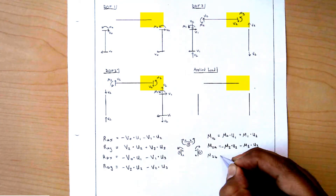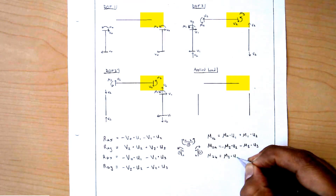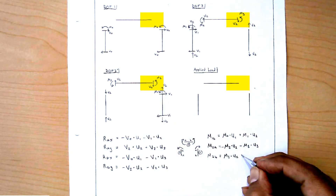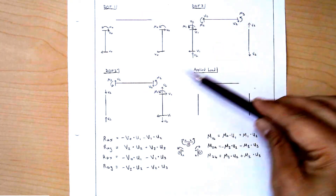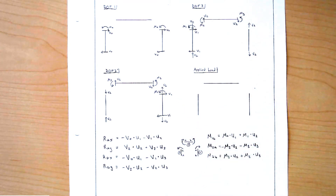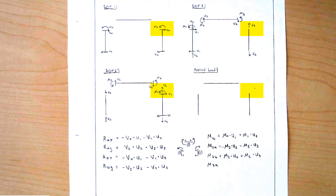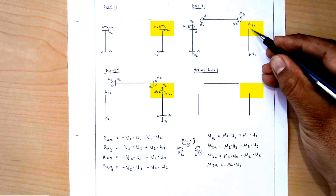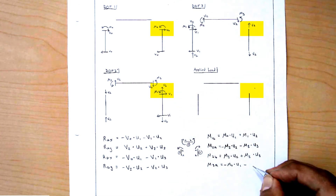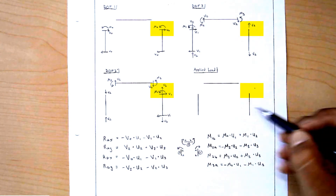Now for M2B: from DOF1 there's nothing; from DOF2, there's M3 scaled by U2; from DOF3, there's M2 scaled by U3. In both cases the arrows for the moments are in the same direction as the sign convention, so they carry a positive sign. Lastly, for member 3 at location A, from DOF1 we have M0 going opposite to the arrow, so it carries a negative sign scaled by U1; nothing for DOF2; then minus M1 scaled by U3, because it's opposite to the direction; and nothing for the applied load.